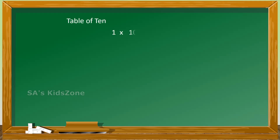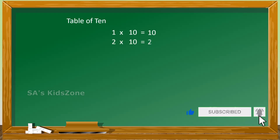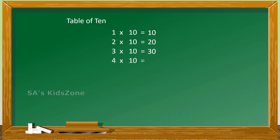1 ten is 10, 2 tens are 20, 3 tens are 30, 4 tens are 40, 5 tens are 50.